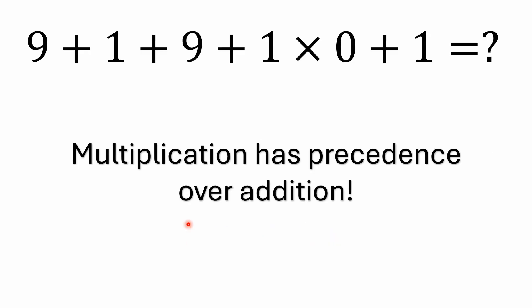First of all, you need to remember multiplication has precedence over addition. This is one of the things that people are really getting confused about. I see a lot of people just adding 9 plus 1 plus 9 plus 1, and then they're multiplying all that by 0, and they're saying all this part is 0, so I just have 0 plus 1, and they're getting 1. And I'll tell you right off the bat, that is incorrect.